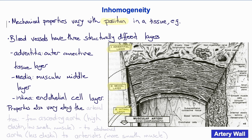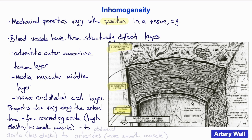Properties also vary along the arterial tree — from the ascending aorta, which is high in elastin and low in smooth muscle, to the abdominal aorta, which has less elastin and tends to be more non-linear as a result. To the arterioles, which have a thicker intima and more smooth muscle and tend to be more viscoelastic and have more hysteresis.